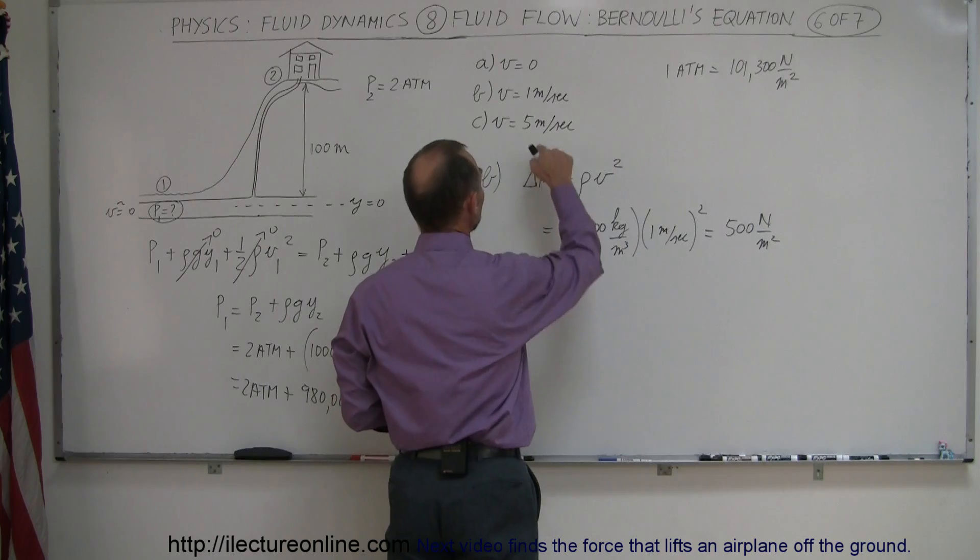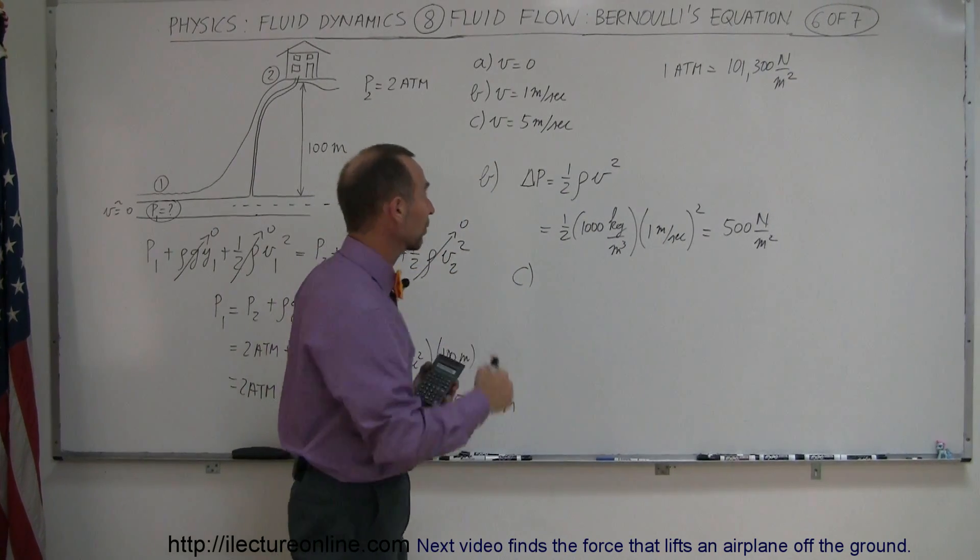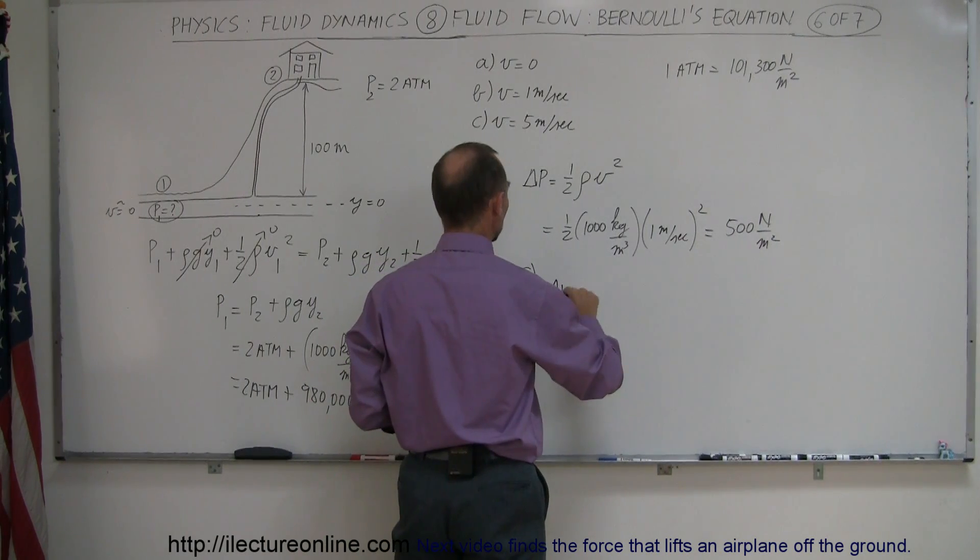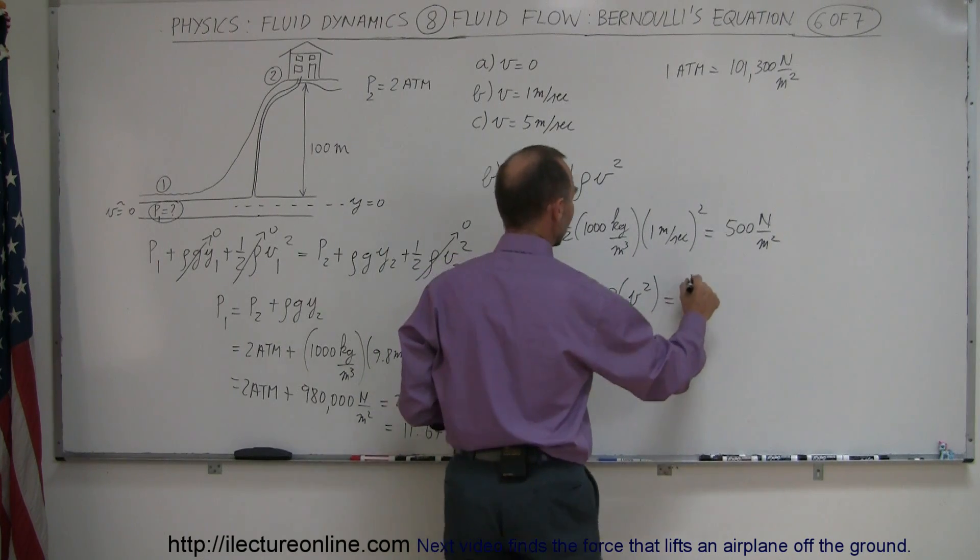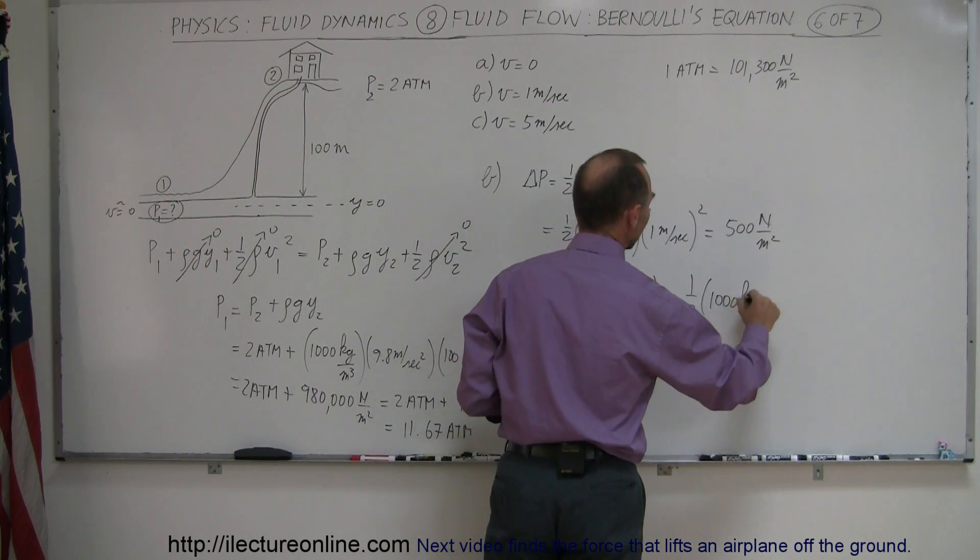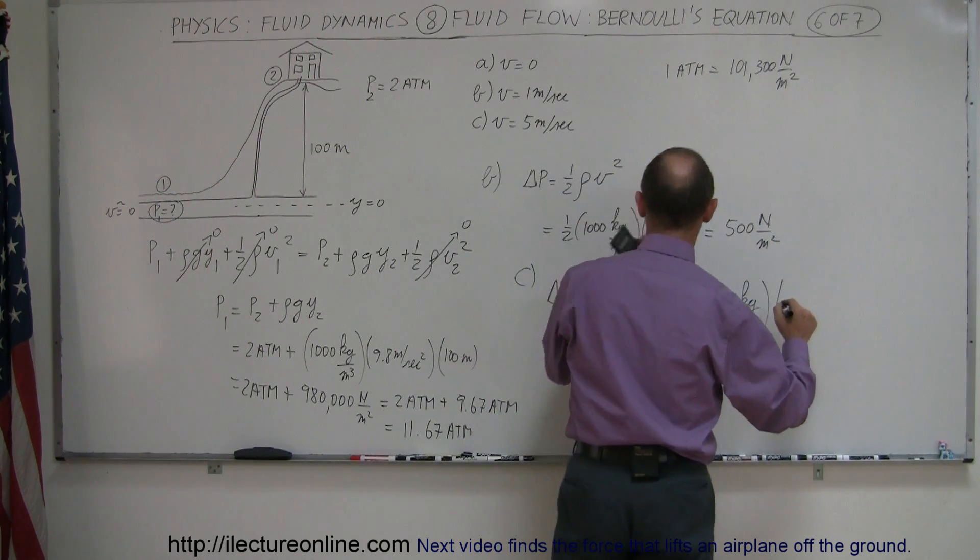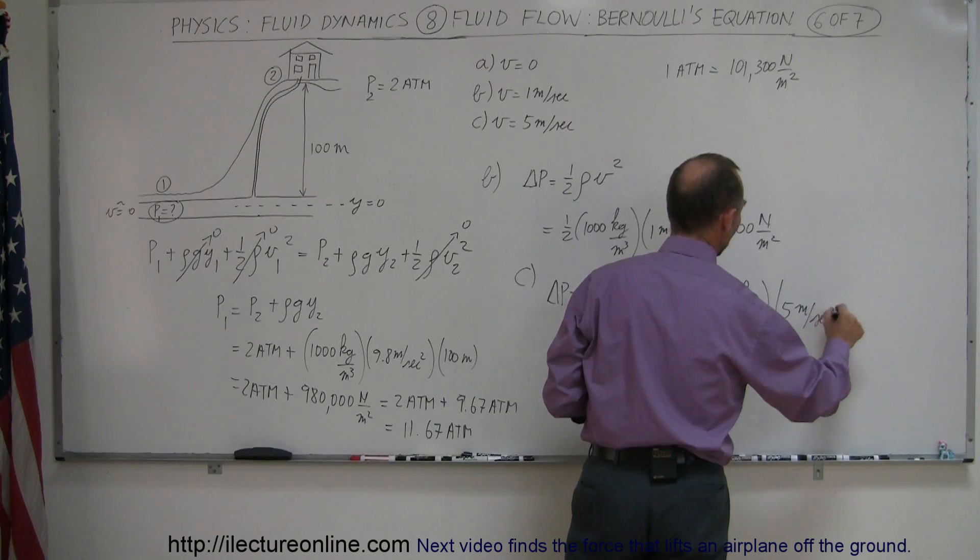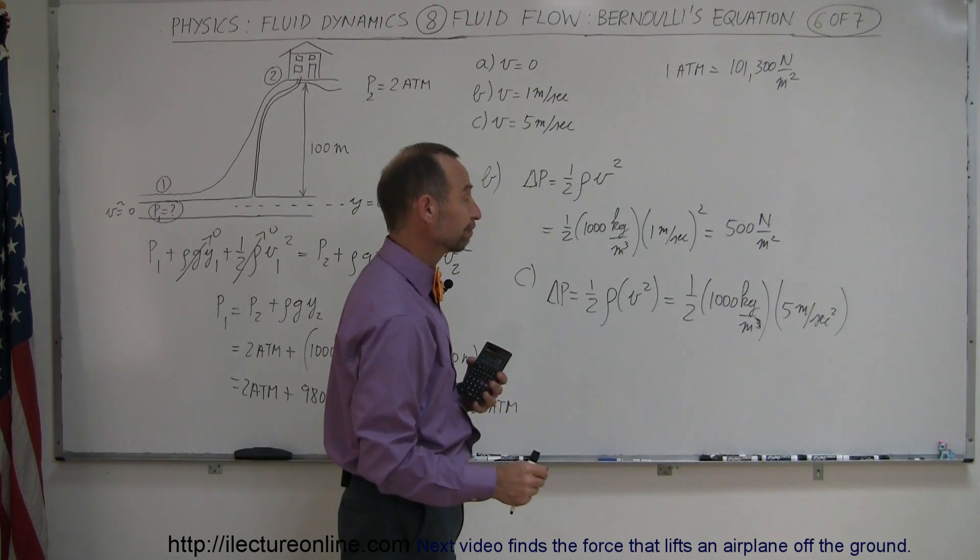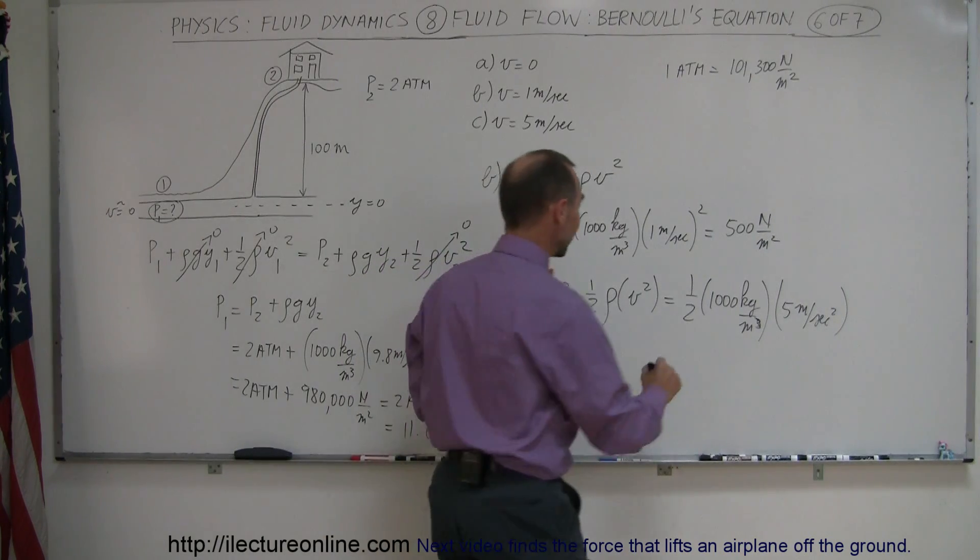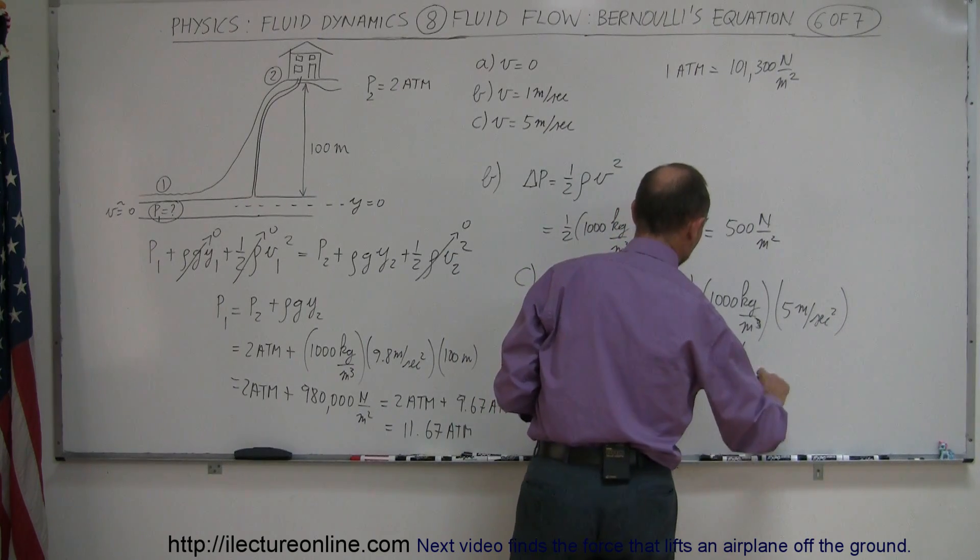What about part C, where now we increase the velocity to 5 meter per second? A lot of faucets being opened up, water is beginning to flow into the house, so we can say that the change in the pressure is equal to 1.5 times the density times velocity squared. So in this case that would be 1.5 times 1,000 kilograms per cubic meter times the velocity, 5 meters per second squared. So now we have 500 times 25, or hmm, that would be 12,500 newtons per square meter, 12,500 newtons per square meter.